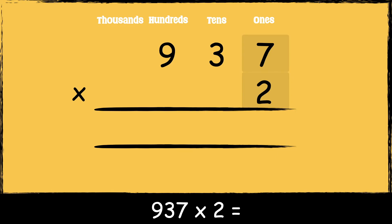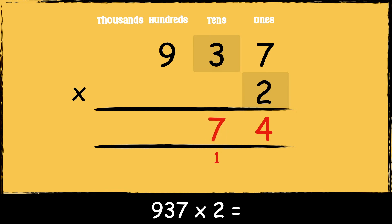Two times seven is fourteen. We carry the one below in the tens column as it represents one ten. Now we multiply two by three: two times three is six, add the one ten gives seven. Now we multiply two by nine hundreds: two times nine is eighteen. So the answer is one thousand eight hundred and seventy-four.